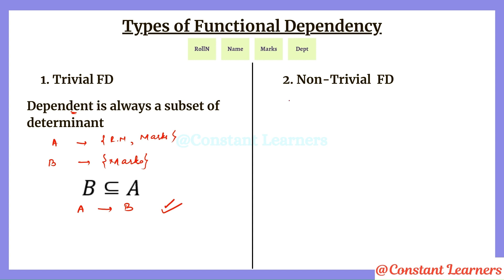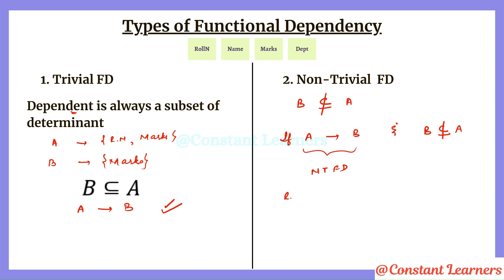The second type is non-trivial functional dependency, which is the opposite of trivial. If A determines B and B is not a subset of A, then this is non-trivial functional dependency. For example, on the left-hand side we have roll number and name, and on the right-hand side we have marks and department. Since marks and department is not a subset of roll number and name, this is a non-trivial functional dependency.